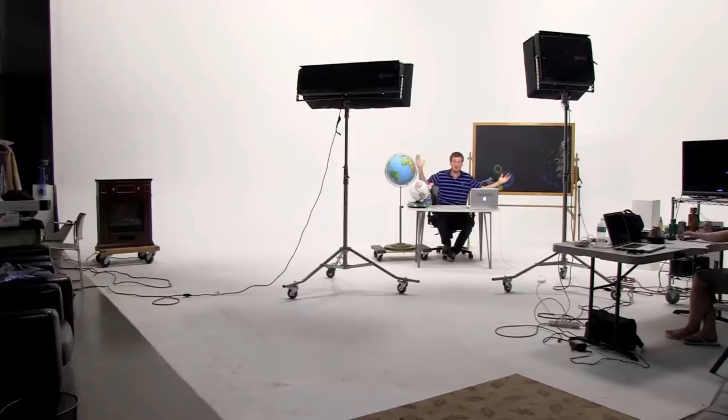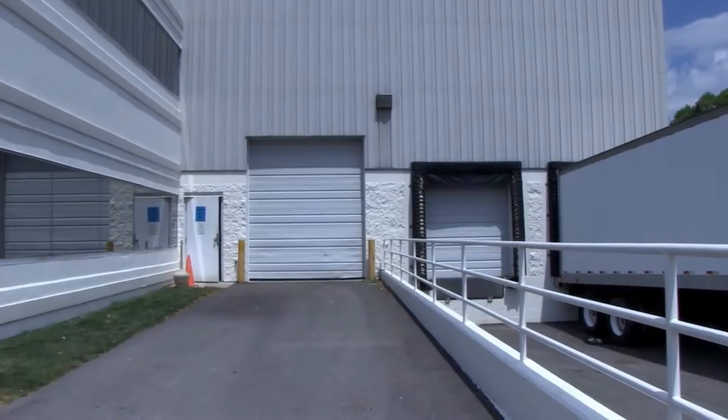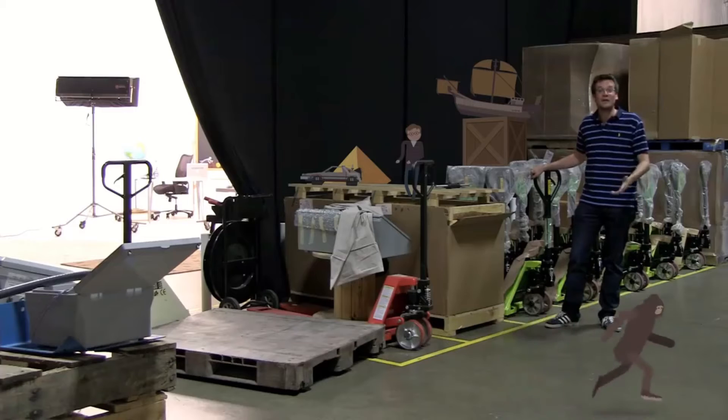Hi, I'm John Green, this is Crash Course World History, and today we're going to discuss the series of events that made it possible for you to watch Crash Course, and also made this studio possible, and made the warehouse containing the studio possible. A warehouse, by the way, that houses stuff for warehouses. That's right, it's time to talk about the Industrial Revolution.